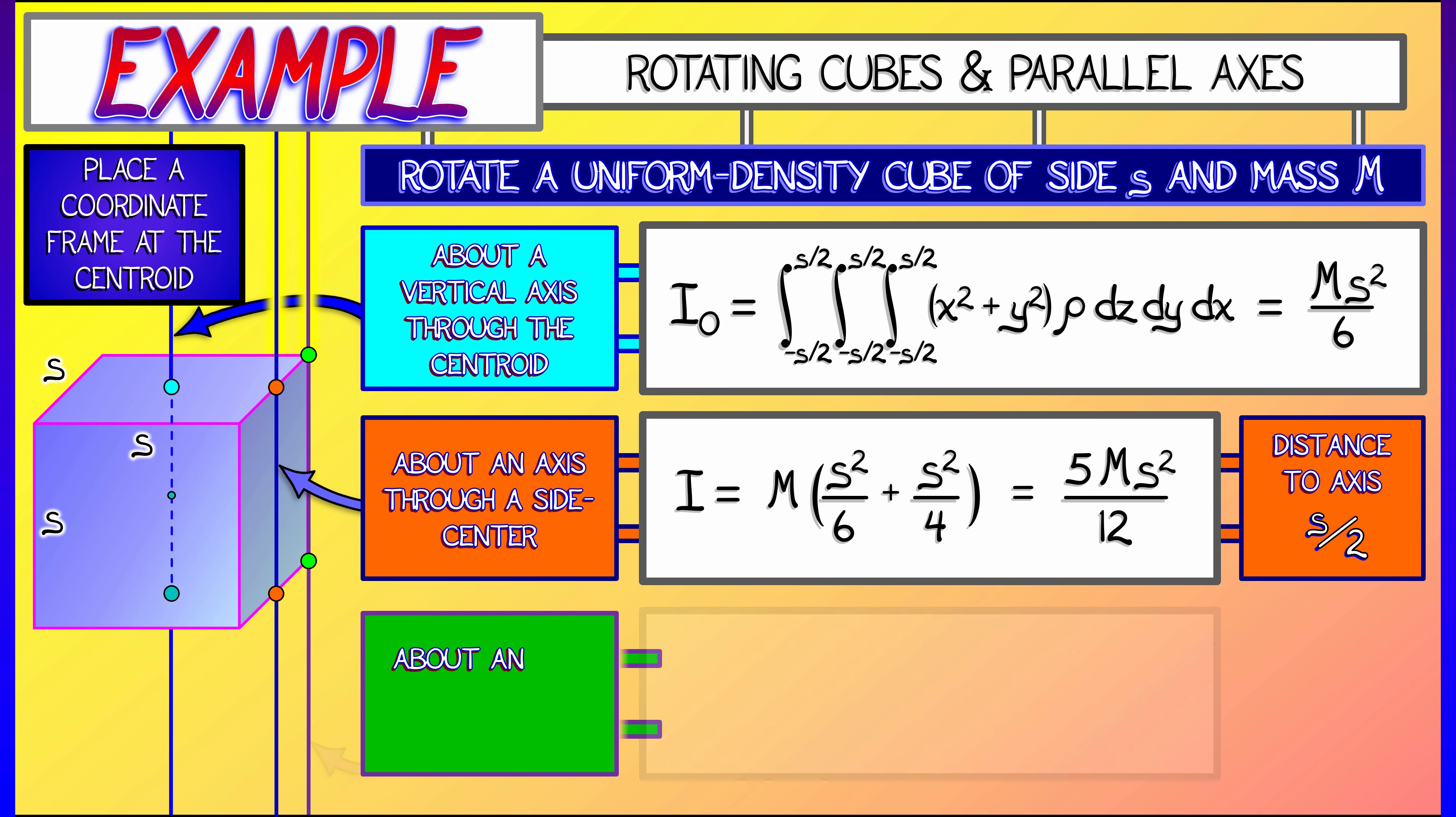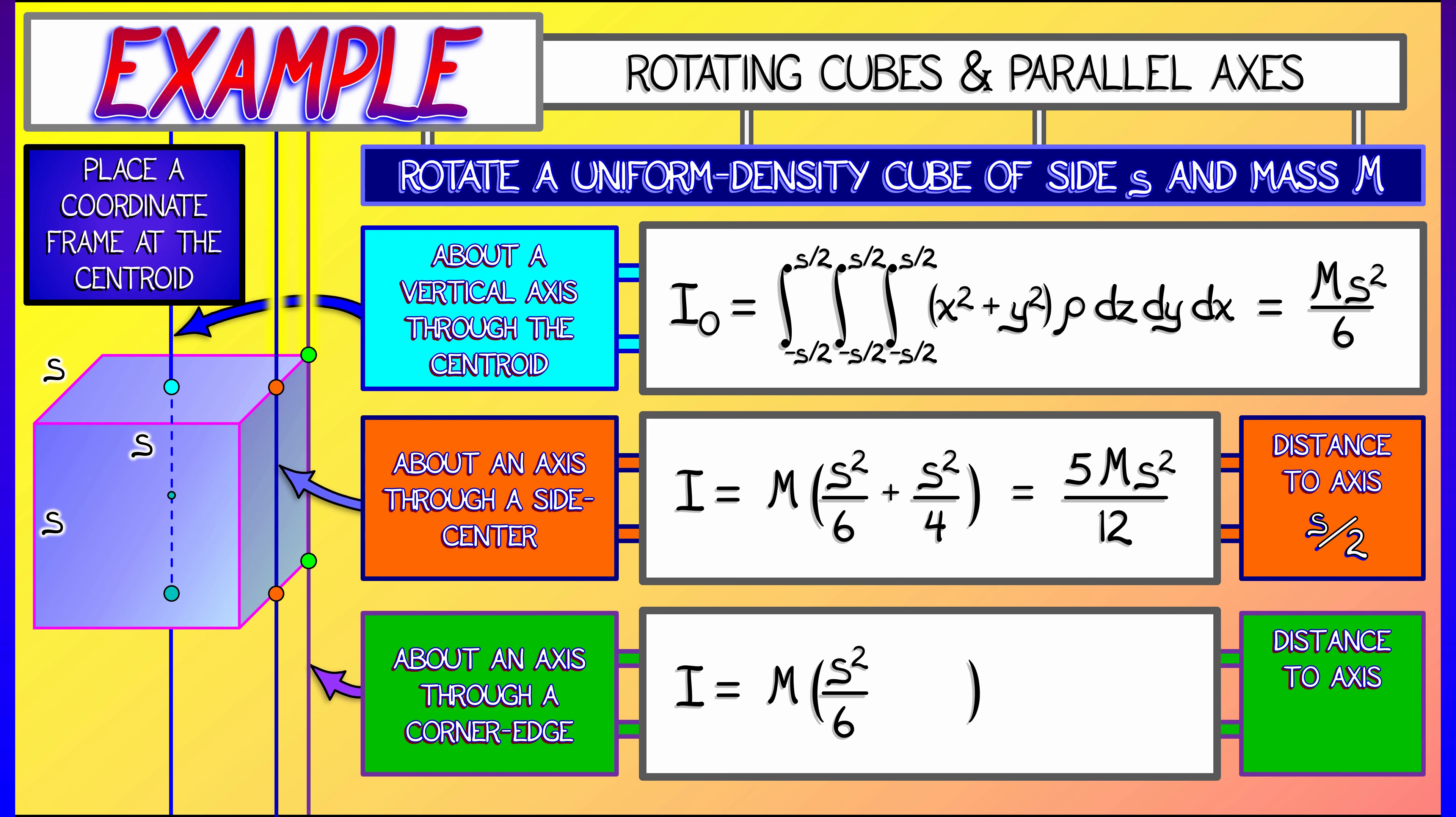Now, for another example, let's take an axis that goes through one of the four corner edges. Then again, it's ms squared over 6 plus m times the distance squared. Since the distance to that corner edge is s divided by square root of 2, we wind up getting s squared over 2 times m. Add it all together, you get two-thirds ms squared.